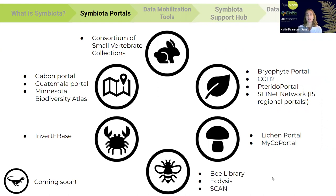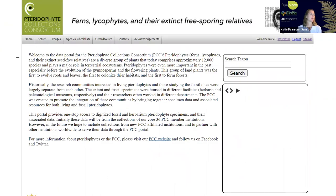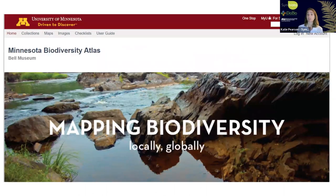There are a lot of Symbiota portals that already exist — they are generally themed: there's a lichen portal, a mycoportal, a bee portal, an invertebrate portal. These are places where data can be aggregated and then shared. Here's an example from the Pteridophyte Collections Consortium — the FERN portal — and the Minnesota Biodiversity Atlas, with Minnesota specimens from all sorts of collections.